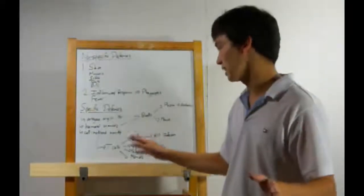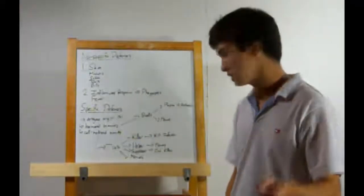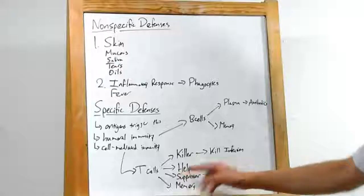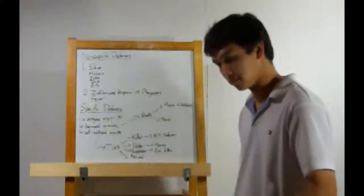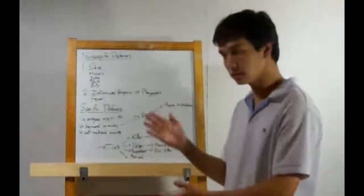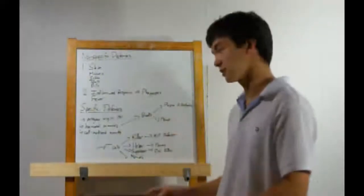What about cell-mediated immunity? This involves T cells, and here we have four different types of T cells. Killer T cells. These just go and kill the infection. They see a cell infected by something, kills it right away. Kills the pathogen, kills the cell, killer T cells.